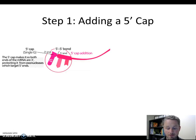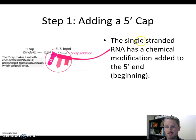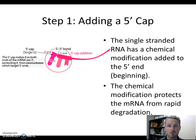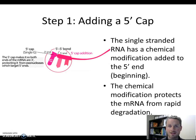An RNA has a 5' end, and that 5' end needs to be protected from degradation. So the first thing we do to this single-stranded RNA is add a chemical modification to the 5' end — a special G nucleotide added to the very beginning. This modification, called the 5' cap, protects that end of the molecule from rapid degradation, so the RNA won't fall apart as quickly and can be used multiple times.